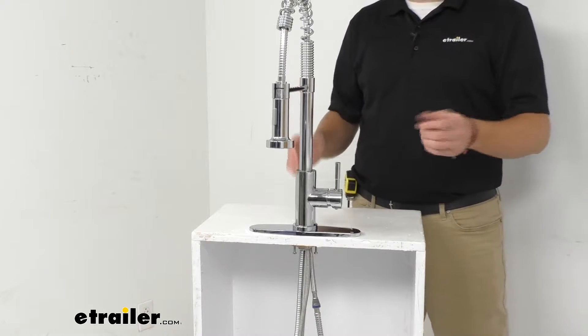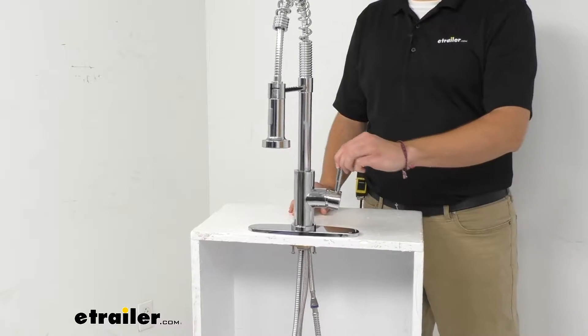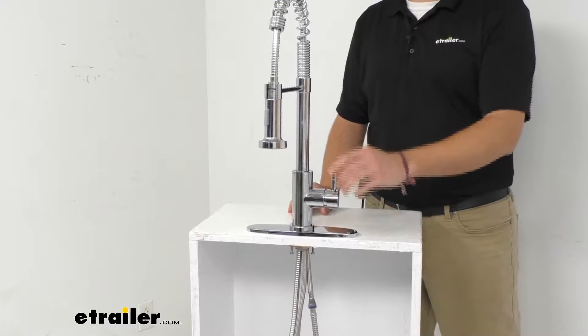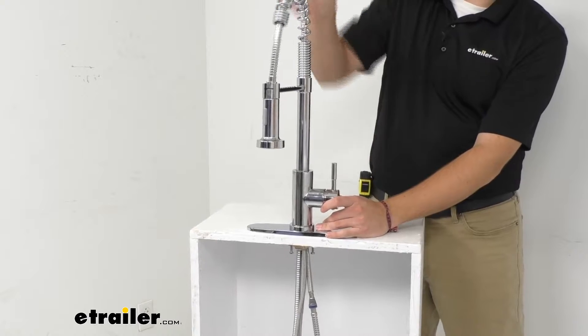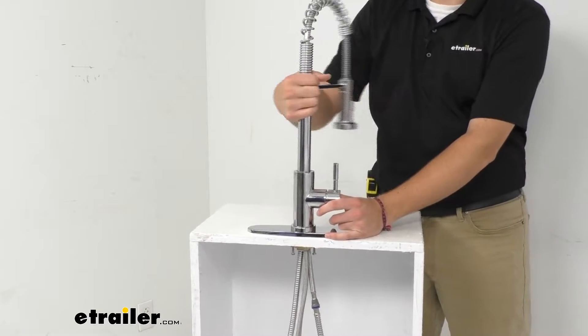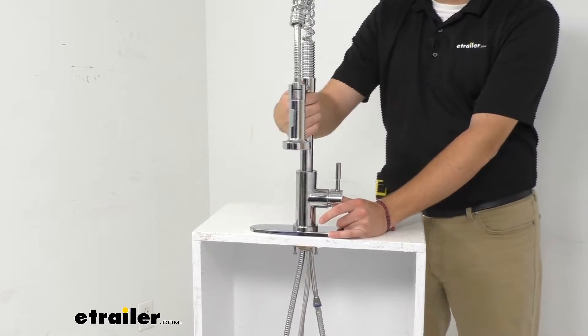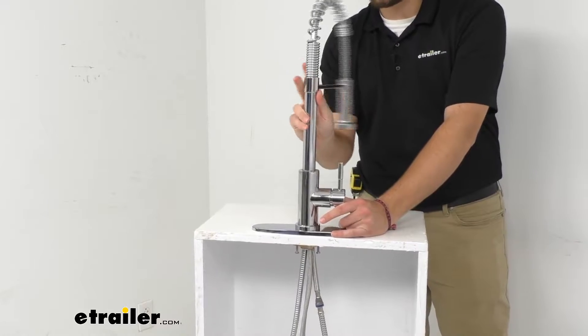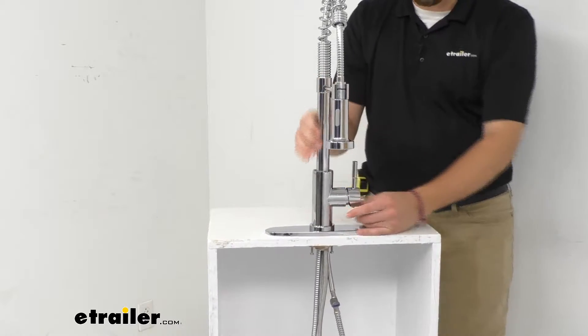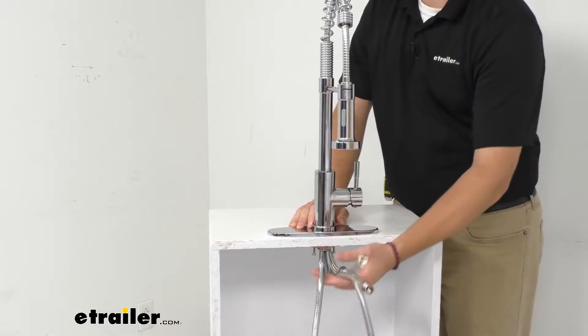This is also what allows us to utilize our single lever design. The gooseneck spout offers us 360 degrees of revolution, which can be great to fix our needed position. Now, with that though, I would be careful of over-rotating it as you can start disrupting your water lines here.